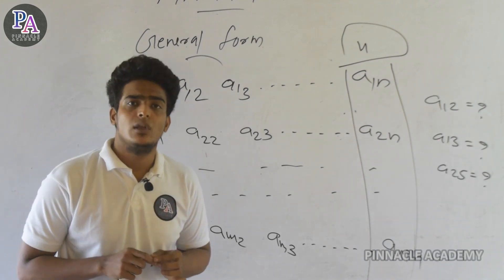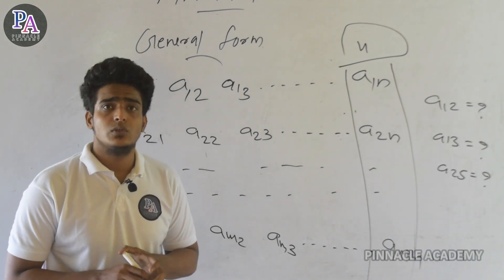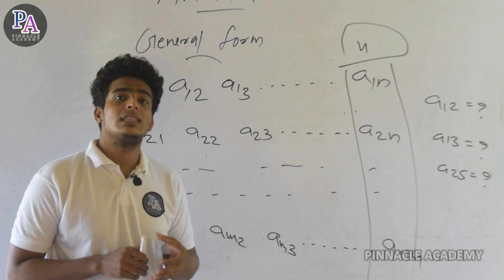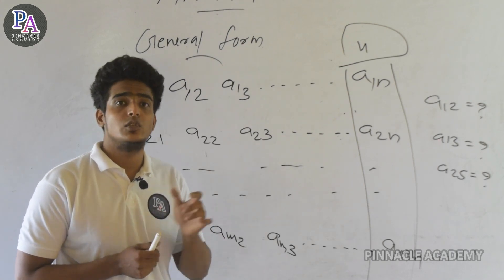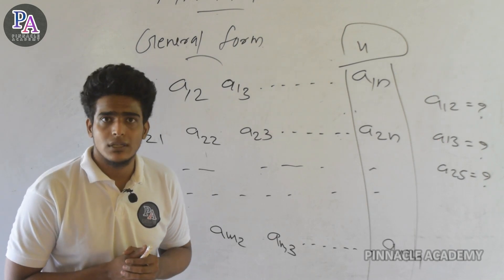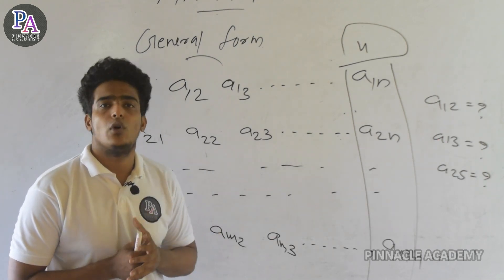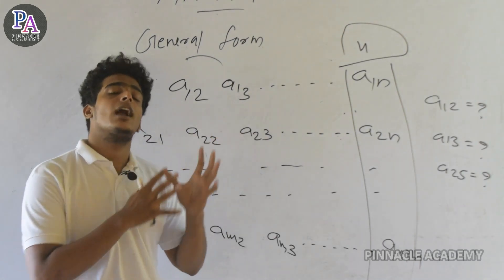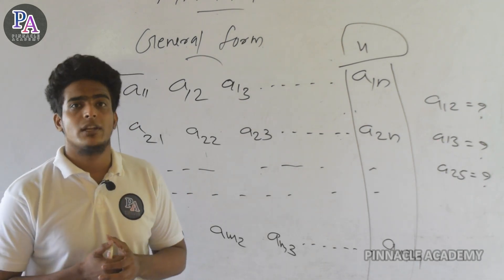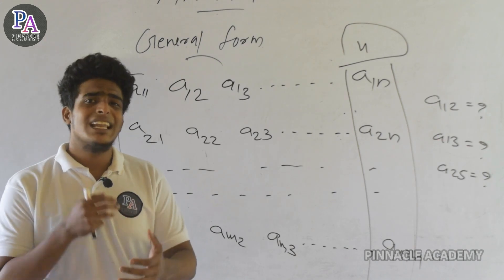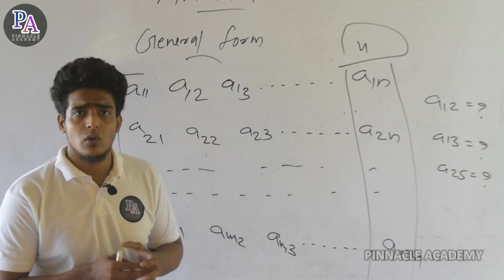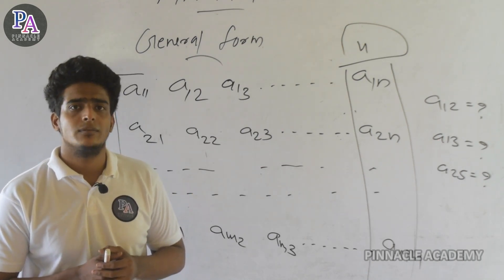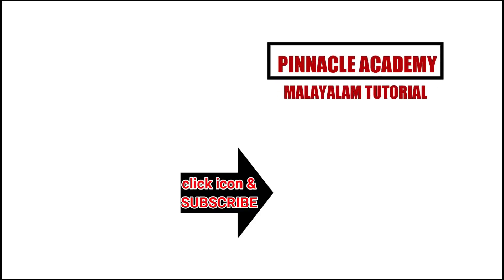We are going to study a few things in this video: first, how to define a matrix; second, how to identify elements; third, what is a row; fourth, what is a column; and the order and general form of a matrix. We have a few types of matrices, and we will explore those in the next video. Please ask in the comments box. Thank you.